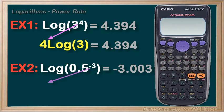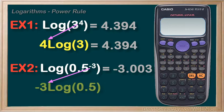So it would change to, well, the negative 3 exponent becomes a multiplication, and we have negative 3 times log of 0.5.